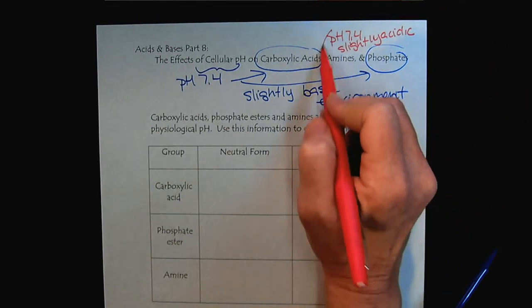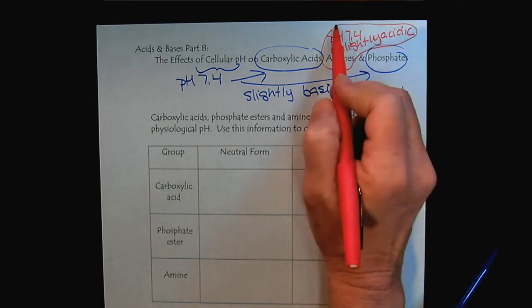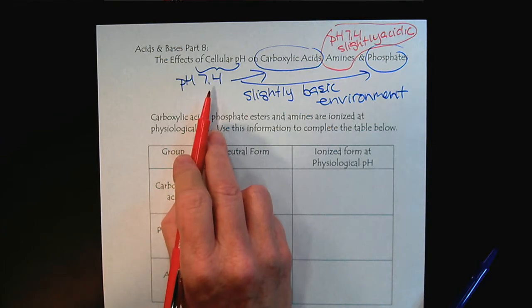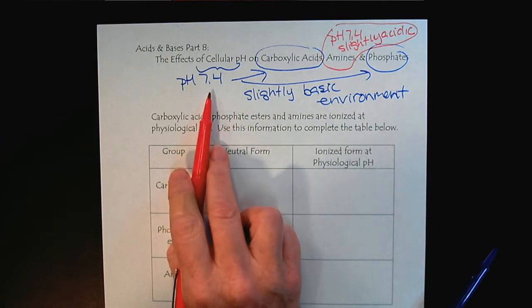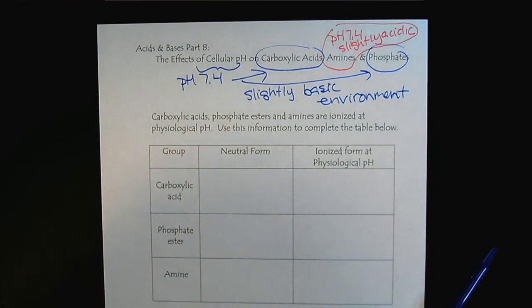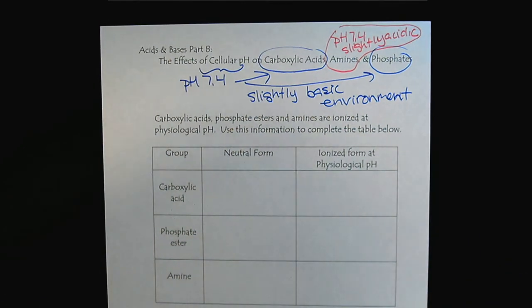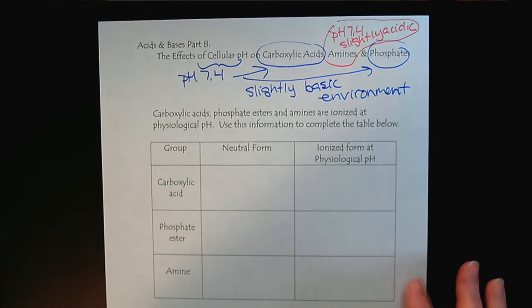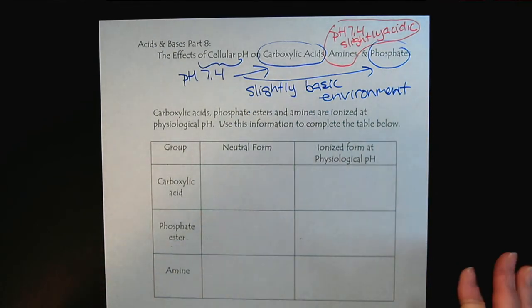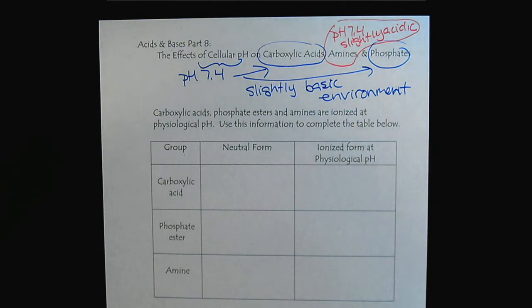Cellular pH doesn't change. It's 7.4. But different functional groups experience that environment differently. Whenever we're looking at reactions occurring at cellular pH or physiological pH, we need to be aware of this important acid-base chemistry. Let's take a closer look.